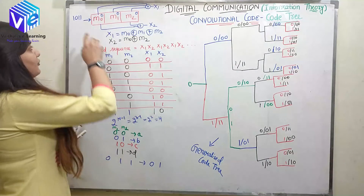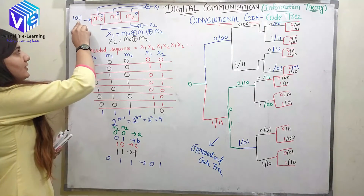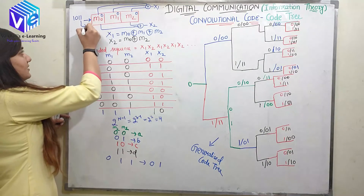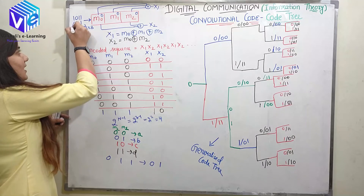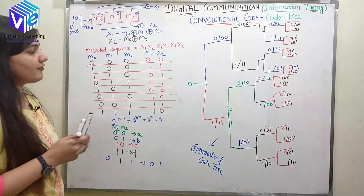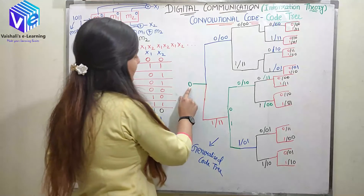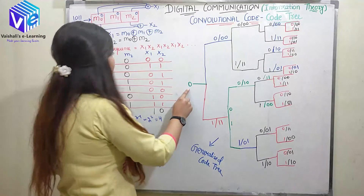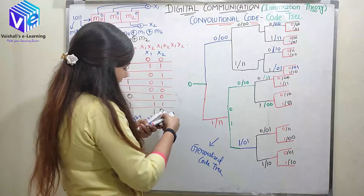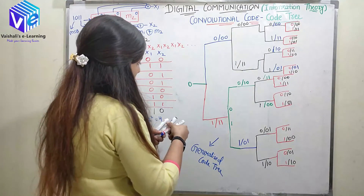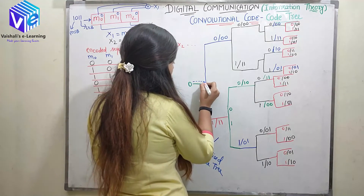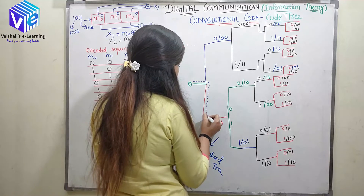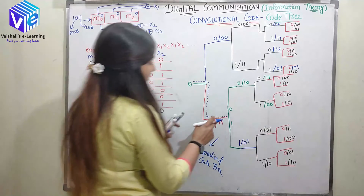Now, if I need to find the code tree for this message bit sequence, note that this is my LSB and this is my MSB. First, my registers are in state 0. The first bit added is 1, so I follow the downward path toward 1. The next bit is also 1, so I again reject the upward branch (0) and move downward toward 1.